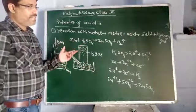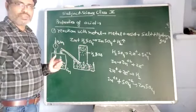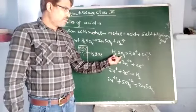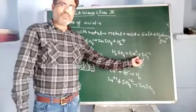Now, how zinc sulphate is formed and H2 gas? If you see, what is the actual mechanism? H2SO4 ionizes to give you H plus and SO4 minus 2.